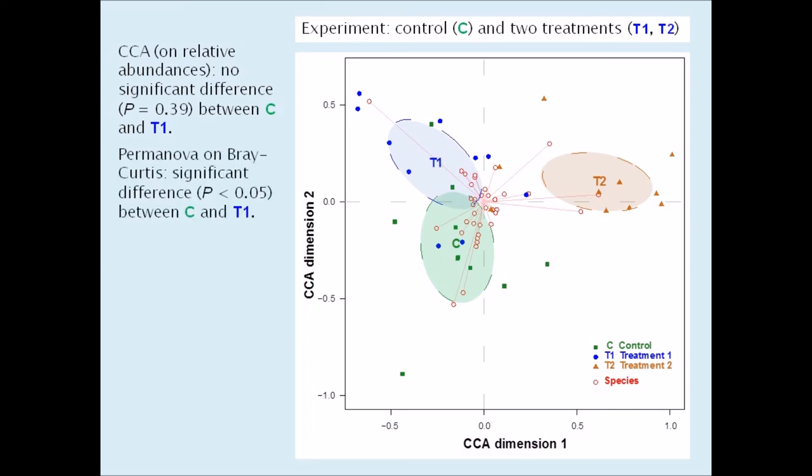On the other hand, the PERMANOVA when Bray-Curtis is used indicates a significant difference between C and T1. This is due to the fact that there are size differences between the samples.